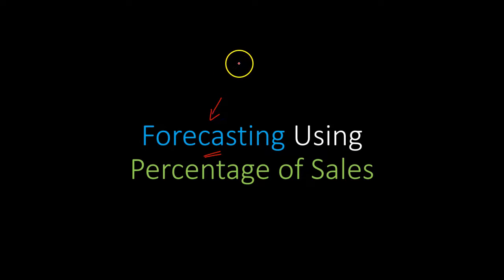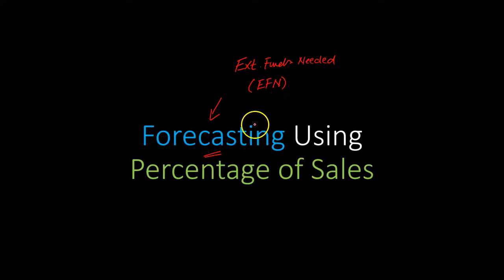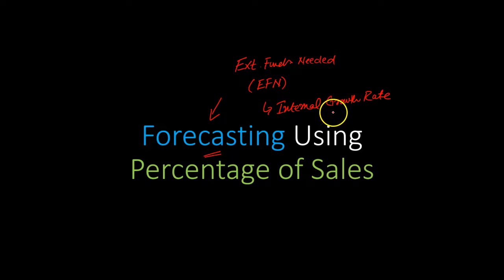In the process, you will see how this forecasting exercise can help you do two important things. First, it can help you determine your external funds needed, sometimes called EFN — the amount of funds that you will need from external sources, either by issuing more debt or equity to support growth. Second, you can also use this to figure out your internal growth rate, which is the maximum rate at which your business can grow without any external funds.